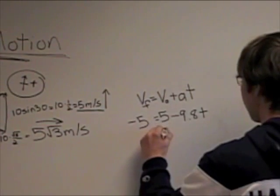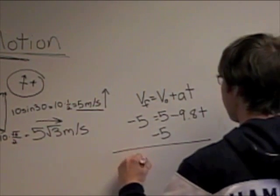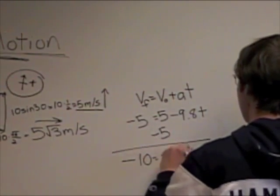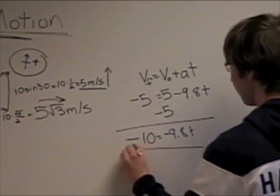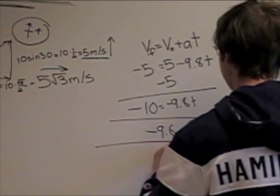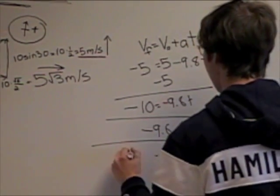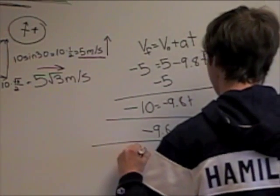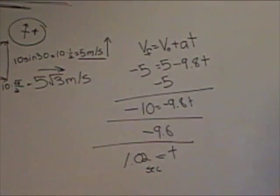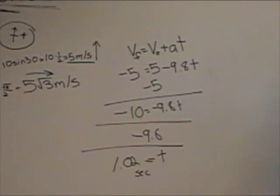So if we subtract 5 over, we get negative 10, which is equal to negative 9.8t. And then t is equal to, I believe this is 1.02 seconds. So that's how long the ball was in the air for.